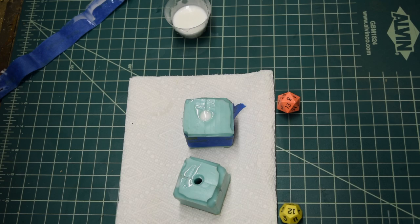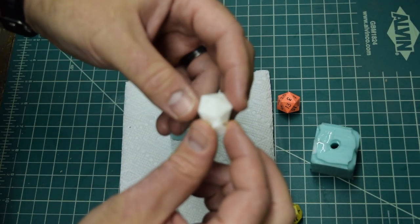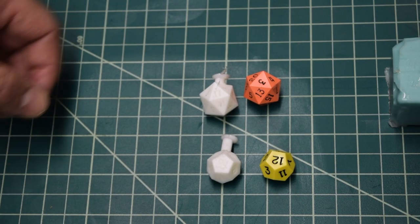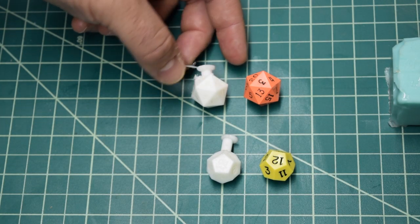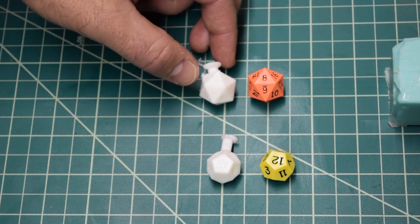Now the tape can be removed and the freshly cast die inspected. At first look the dice come out pretty good. There seems to be some flashing where resin leaked into the cut sides of the mold, but everything looks okay.